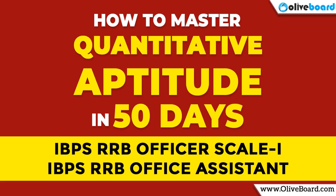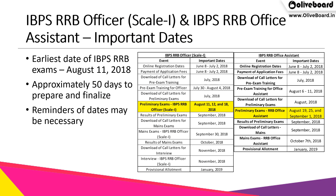Do not forget to subscribe to the YouTube channel for more such content. Let's get started. Before we begin, let's take a quick look at the important dates. For IBPS RRB PO, the online registration dates are till July 2, 2018. If you haven't registered already, please do so. The prelims examination for IBPS RRB PO is on August 11, 12, and August 18, 2018.